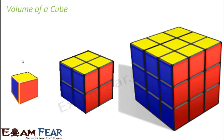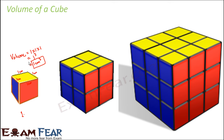In the first scenario, we have just one cube where the length of each side is one centimeter. In a cube all sides are equal, so each side measures one centimeter. Volume is side × side × side. Multiplying one three times gives us one to the power three, which equals one centimeter cubed. So the volume of this cube is one centimeter cube.